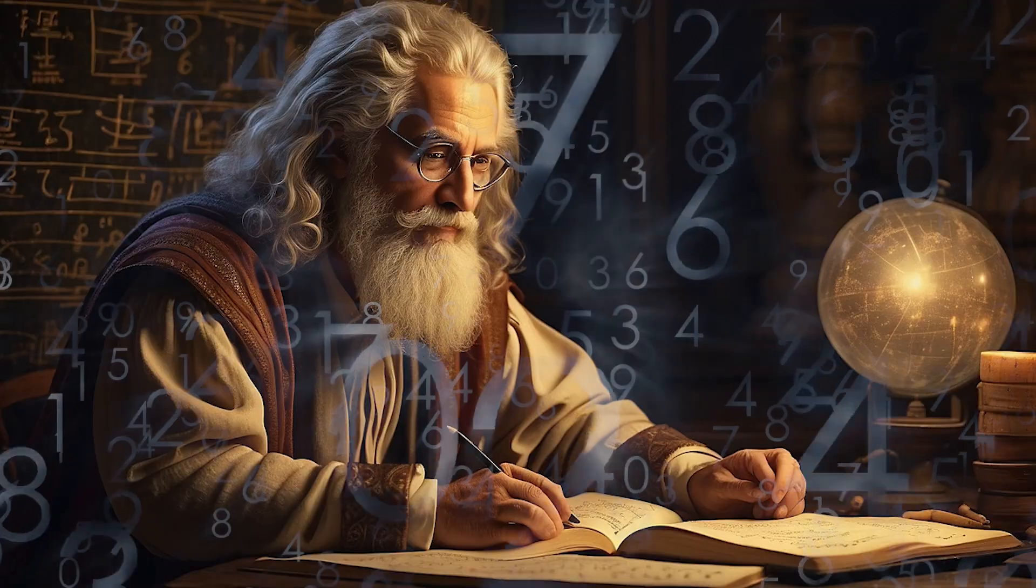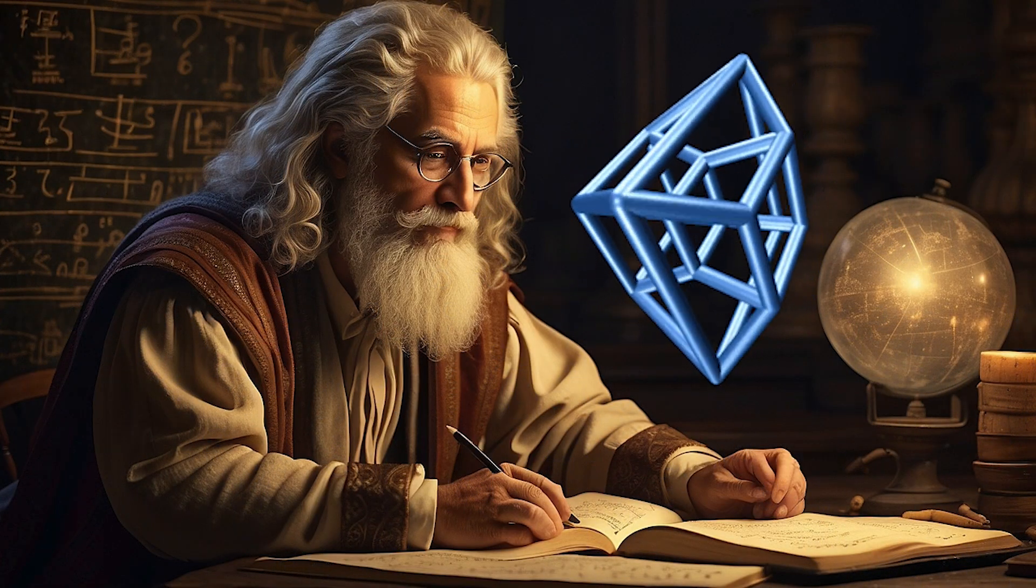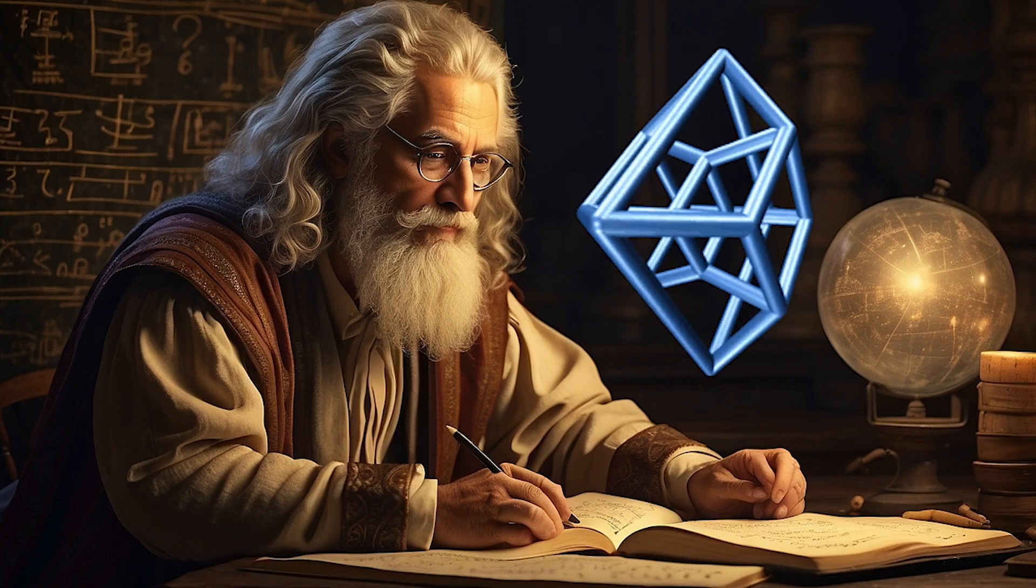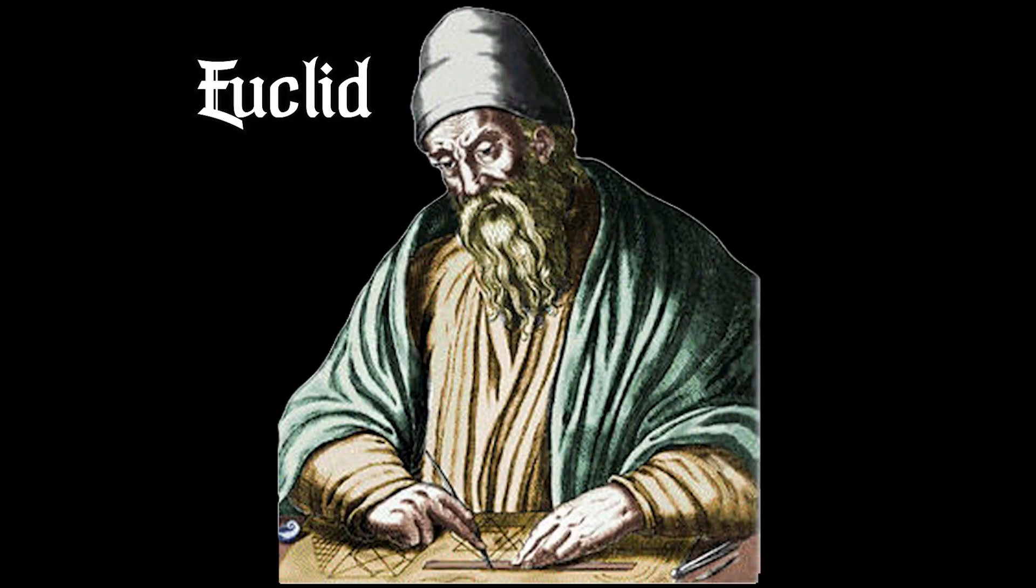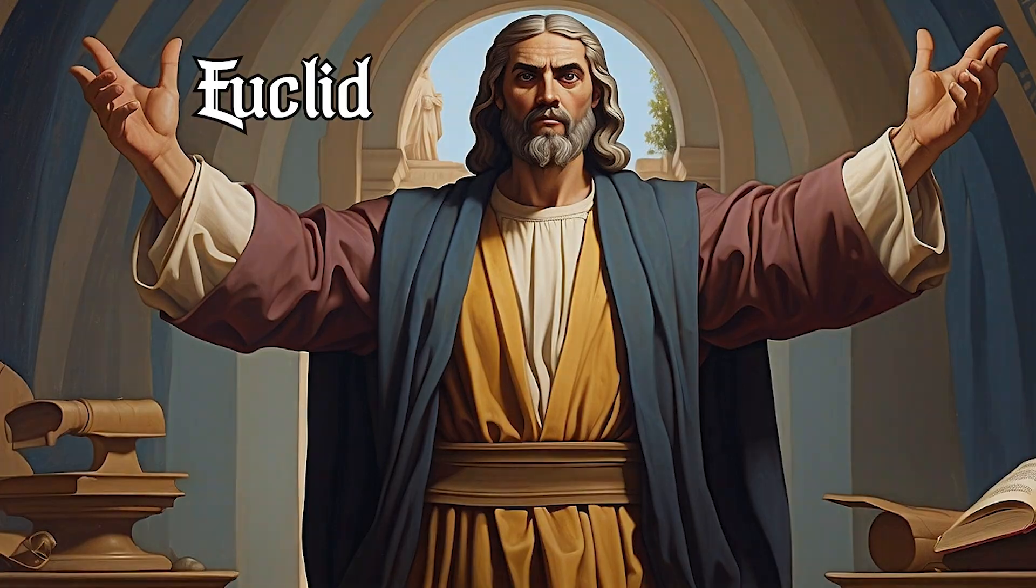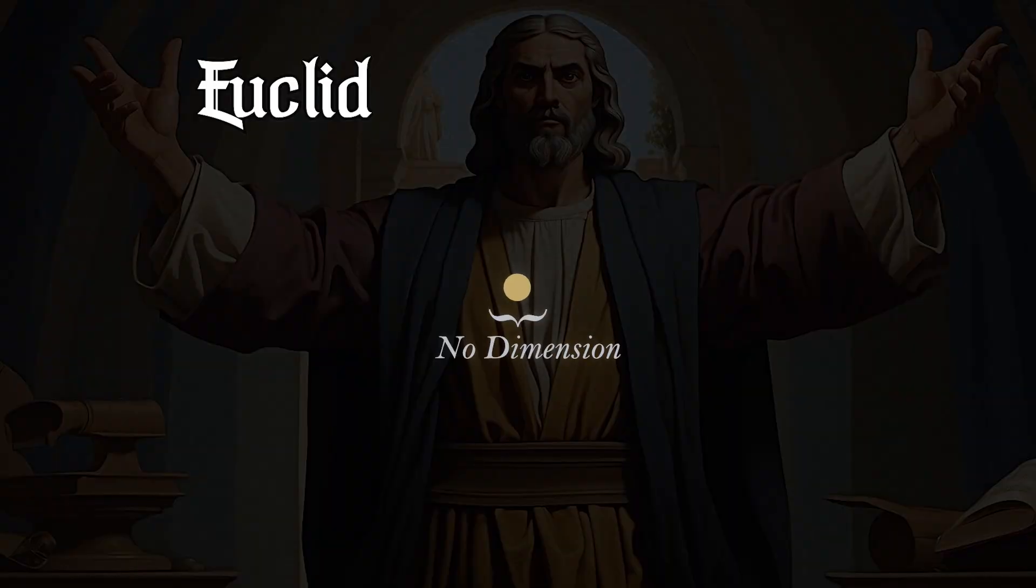For several thousand years, mathematicians believed that the fourth dimension cannot exist because we cannot picture it in our minds. Two thousand years ago, Euclid, one of the greatest mathematicians ever lived, said that a point has no dimension at all.